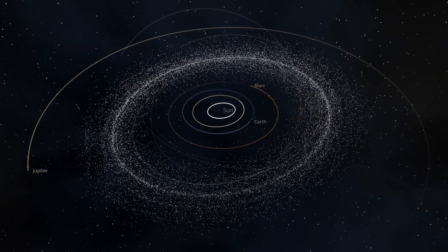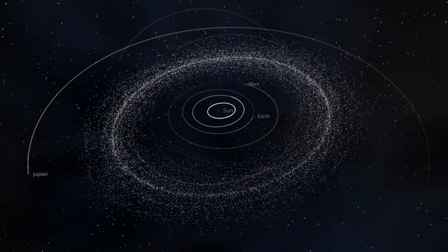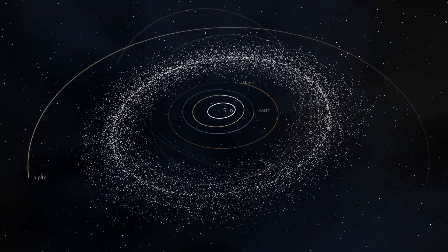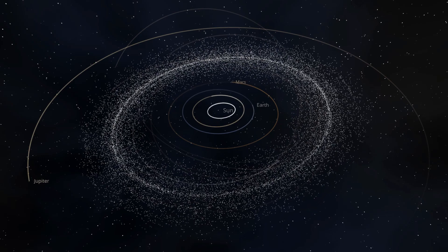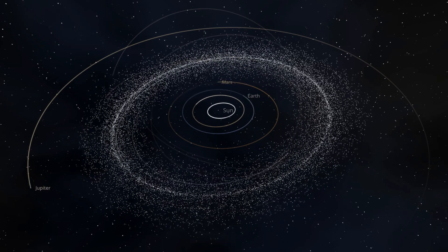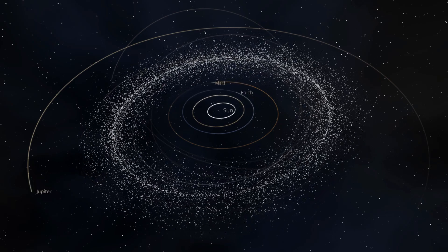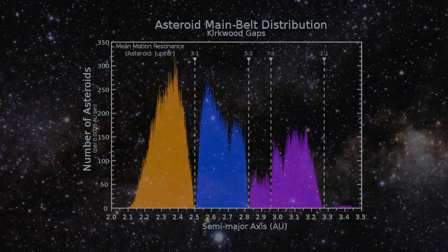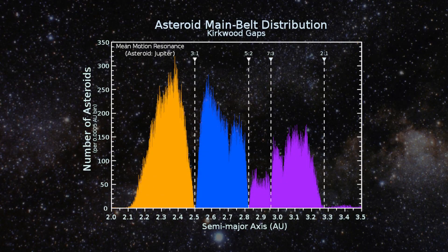There's a famous problem in the distribution of asteroids called the Kirkwood gap problem. If you look at the number of asteroids versus distance from the Sun, that distribution shows gaps near resonances with Jupiter. For instance, there's a gap at the three-to-one resonance, where the asteroid goes around the Sun three times every time Jupiter goes around once.